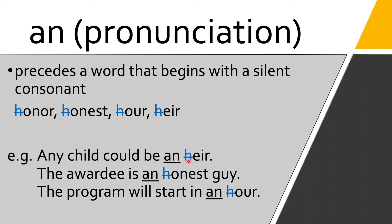'The awardee is an honest guy' — same case, H is silent, so we have a vowel sound and we use the article 'an.' Another example: 'The program will start in an hour.' We cannot say 'a hour,' so we use 'an' because of the silent letter H — the vowel sound that comes through is the letter O.